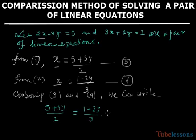What the next step is? We multiply this by 3 and we multiply this by 2. So 3 into 5 plus 3y equals 2 into 1 minus 2y.